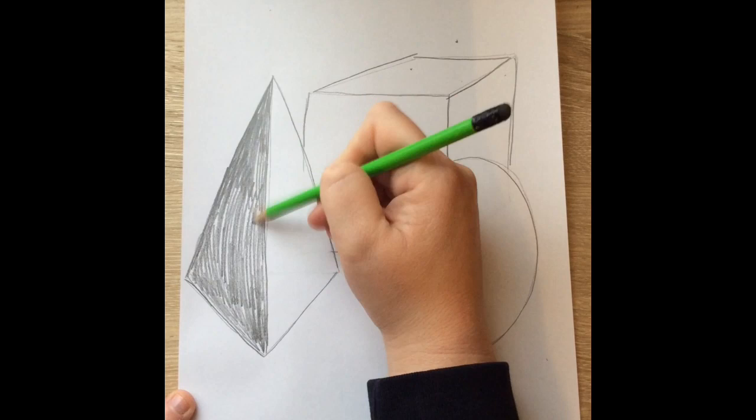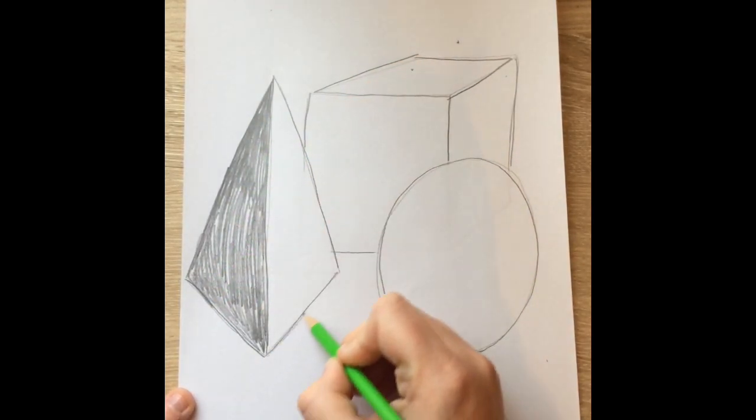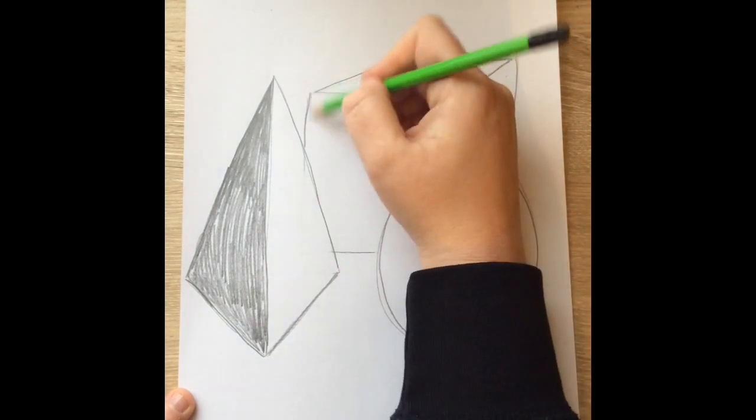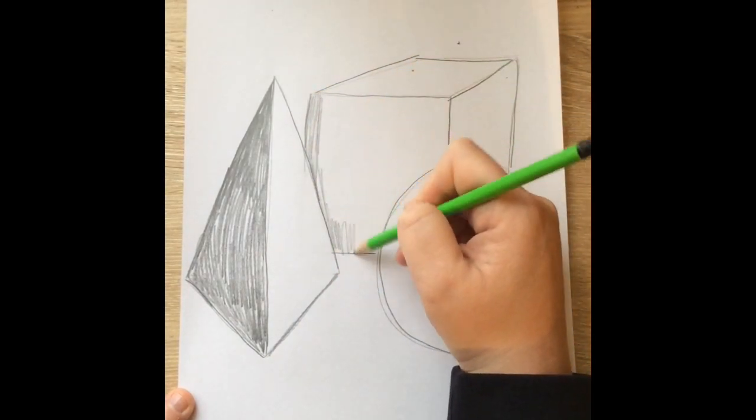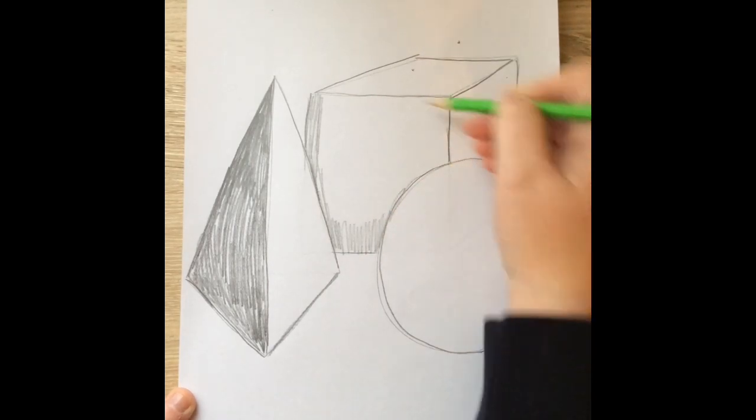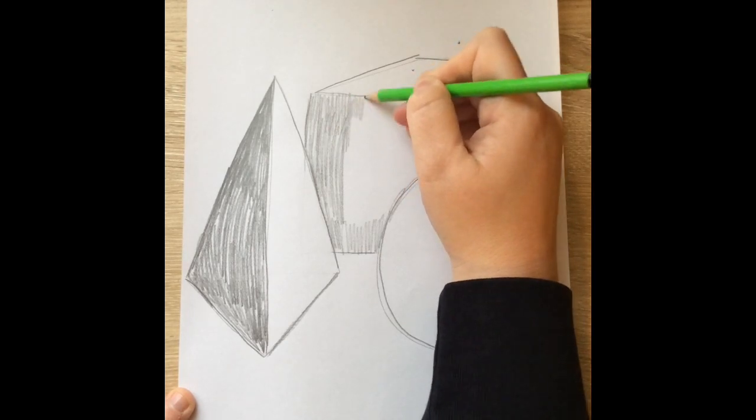Just like I'm doing, I'm darkening the left side of my triangle, or my pyramid now, and then I'm going to move on to that front face of this cube and darken it with my pencil just like I did with the pyramid.